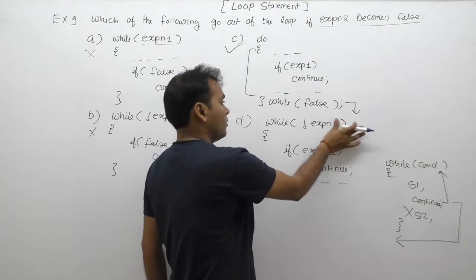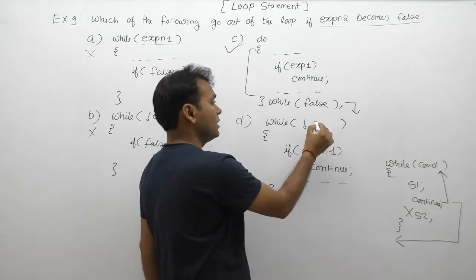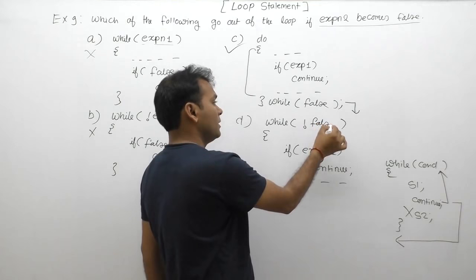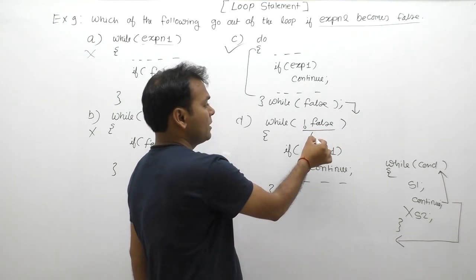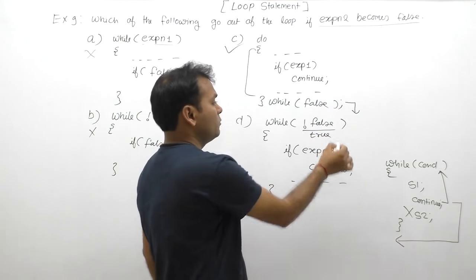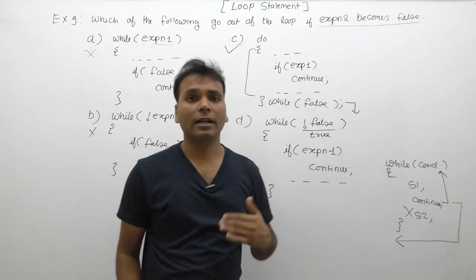Second case, option D: expression two we put false with the NOT operator. In this case, false becomes true. Then it is given that time. Therefore, correct option.